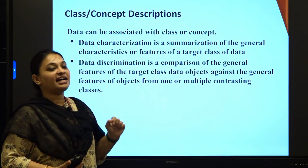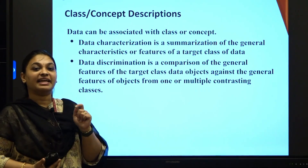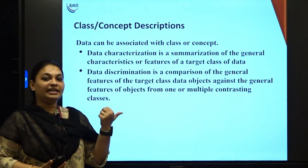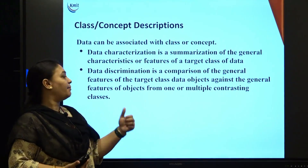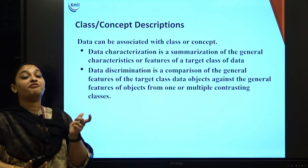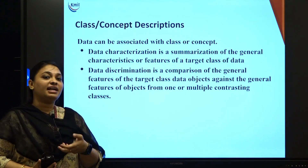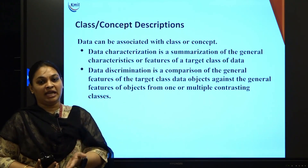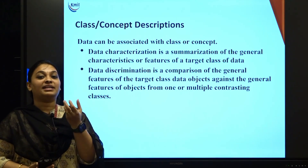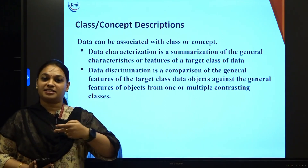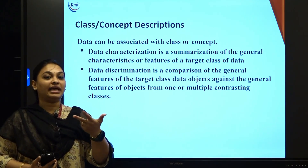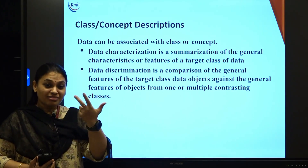What do we mean by data characterization? Data characterization gives the overall summary of that data — the overview of the data, that class or concept we are talking about. Data discrimination compares different sets of data and gives us the result, which might be in the form of a bar chart or a pie diagram. Based upon two different things, we take a target data — for example, a toothpaste like Pepsodent or Colgate — and based on the two, we take a graph showing how customers prefer each type of toothpaste.